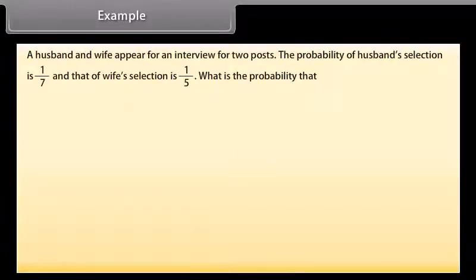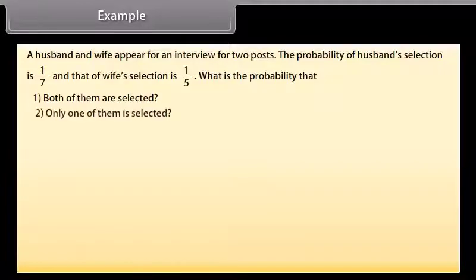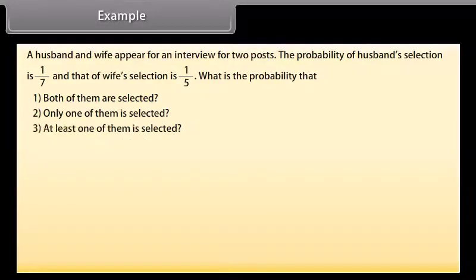Example: A husband and wife appear for an interview for two posts. The probability of the husband's selection is 1/7 and that of the wife's selection is 1/5. What is the probability that (1) both of them are selected, (2) only one of them is selected, and (3) at least one of them is selected?